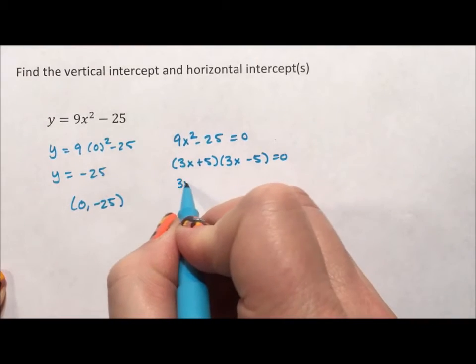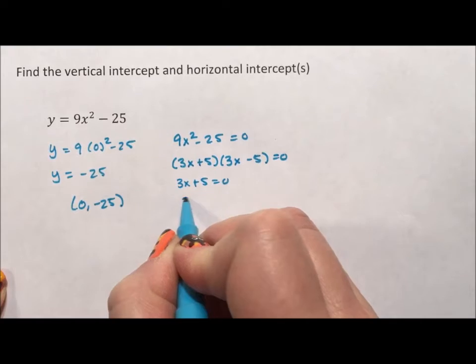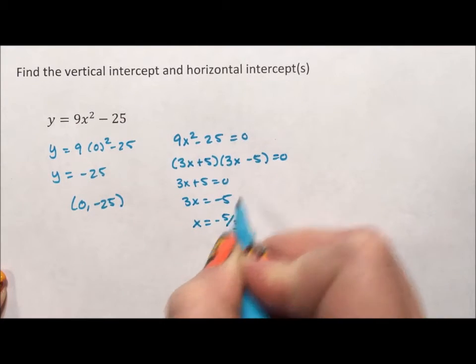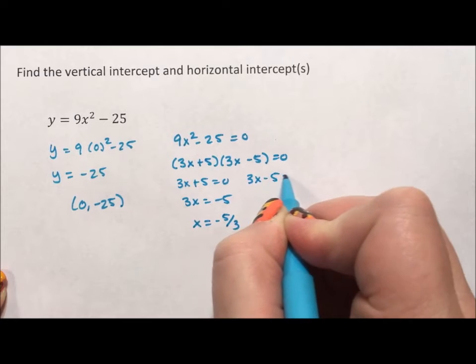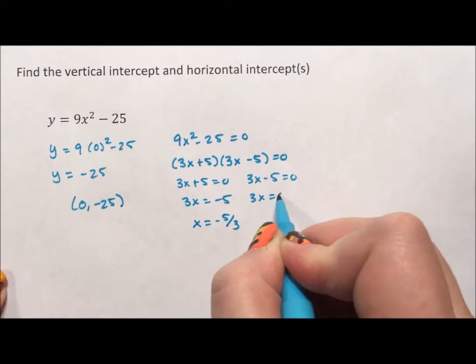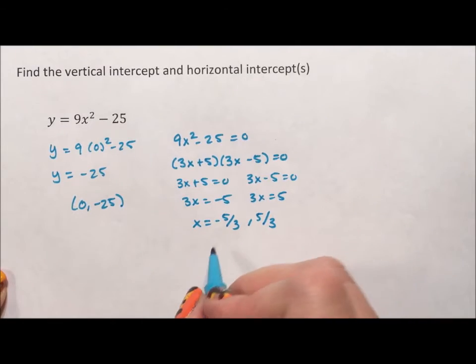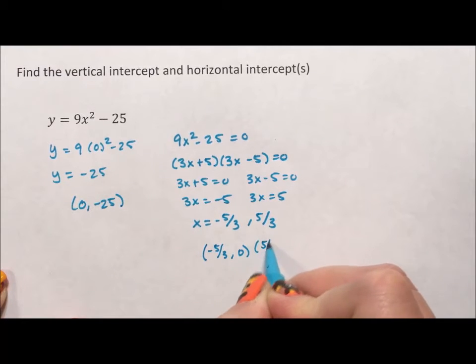3x plus 5 equals 0 when 3x is negative 5, or x is negative 5 thirds. 3x minus 5 equals 0 when 3x is 5, or x is 5 thirds. As ordered pairs, that's (-5/3, 0) and positive (5/3, 0).